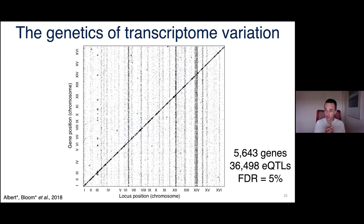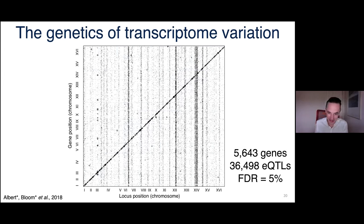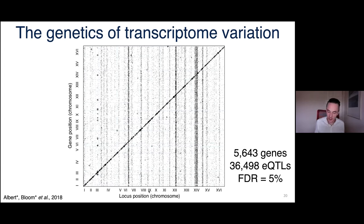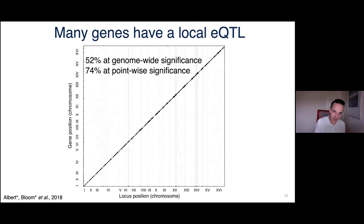Here is the map — where are the eQTLs? It's a complex figure we'll work through over the next 25 minutes or so. The x-axis is the physical position of genes in the genome by chromosome; the y-axis is the position of the locus that influences expression of each gene. We start by focusing on the diagonal — variants close to the gene they affect, likely in the promoter, so locus position equals gene position.